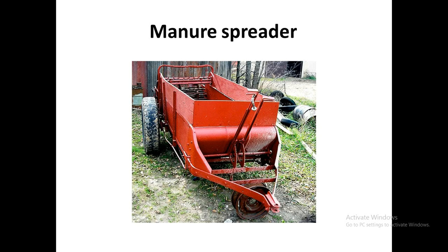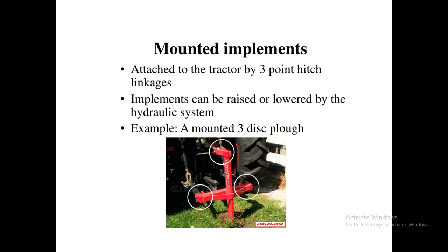There are three types of mounting or attachment of implements to the tractor. The first is mounted implements — these are completely mounted on the tractor, generally attached by a three-point linkage system, and can be raised or lowered using the hydraulic system. An example is a mounted three-disc plow.